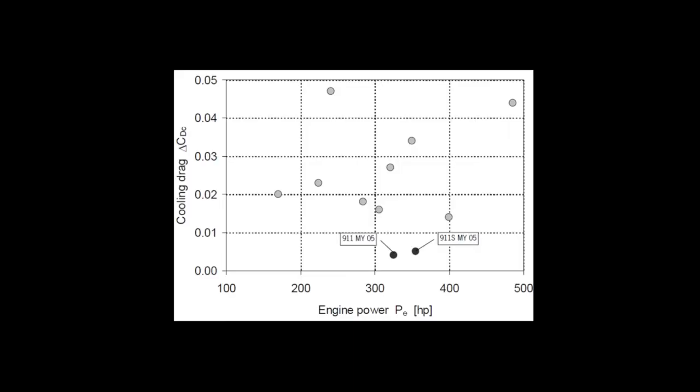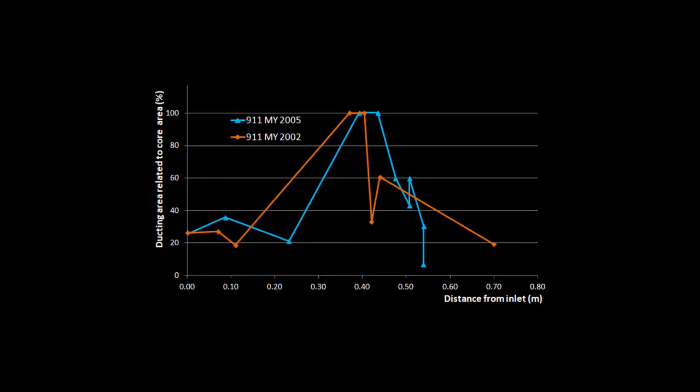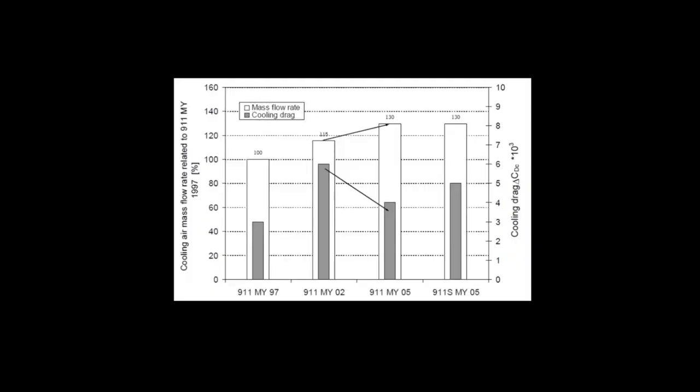Again, we can look to Porsche. Their insanely low drag figures are partially due to their ducting design. Here you can see how much better they are at designing the ducting system to their competitors. Porsche have used an exit area smaller than the inlet on both the 2002 and 2005 911. But the 2005 exit broke the mould. It was just 7% of the core area. Even with the smaller exit, the system as a complete package increased the flow rate whilst reducing the cooling drag considerably.